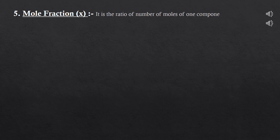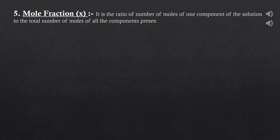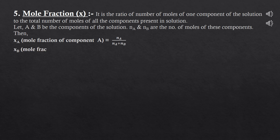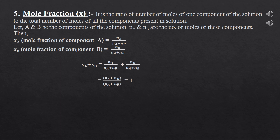The fifth concentration term is mole fraction, denoted by x. It is the ratio of moles of one component to the total moles of all components. For components a and b with moles n_a and n_b: x_a = n_a / (n_a + n_b) and x_b = n_b / (n_a + n_b). Therefore x_a + x_b = 1, so if the mole fraction of one component is known, the other is simply 1 minus that value.